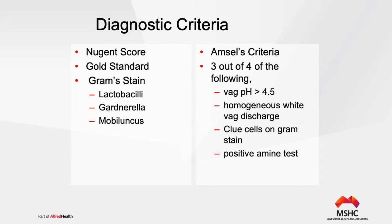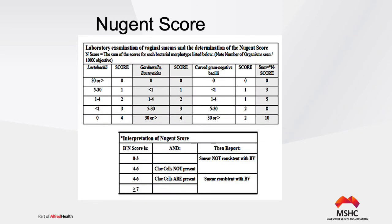The four Amsel's criteria are: a vaginal pH of greater than 4.5; homogenous white vaginal discharge pooling in the posterior blade of the speculum; clue cells seen on gram stain; and a positive amine test using potassium hydroxide. This can all be done at the bedside. The Nugent score is a detailed scoring system the laboratory will present with their results.